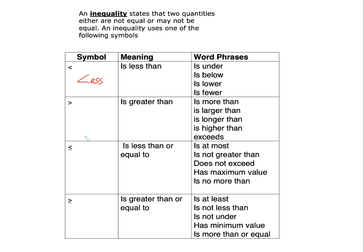We're familiar with the standard meaning for the inequality symbols. However, when you get into word problems, they don't use the standard meaning. They use different word phrases and you have to be familiar with what those word phrases represent. Less than is paired with words such as under, below, lower, and fewer. If it is greater than, it is paired with more than, larger than, longer than, higher than, and exceeds.